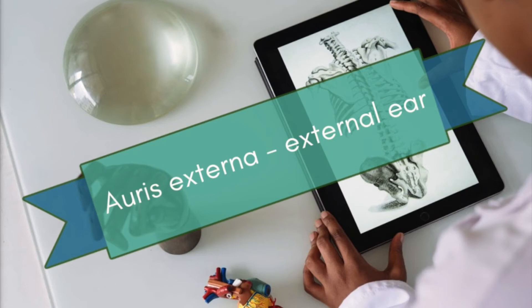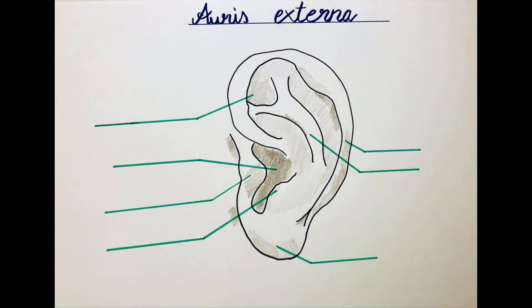Hello and welcome back to this channel. My name is Victoria and today we're going to talk about the ear. The ear has three parts: the external, the middle, and the inner ear. Today we're going to talk about the external ear, or auris externa — the different parts, what they do, the blood supply, innervation, and the lymph drainage.